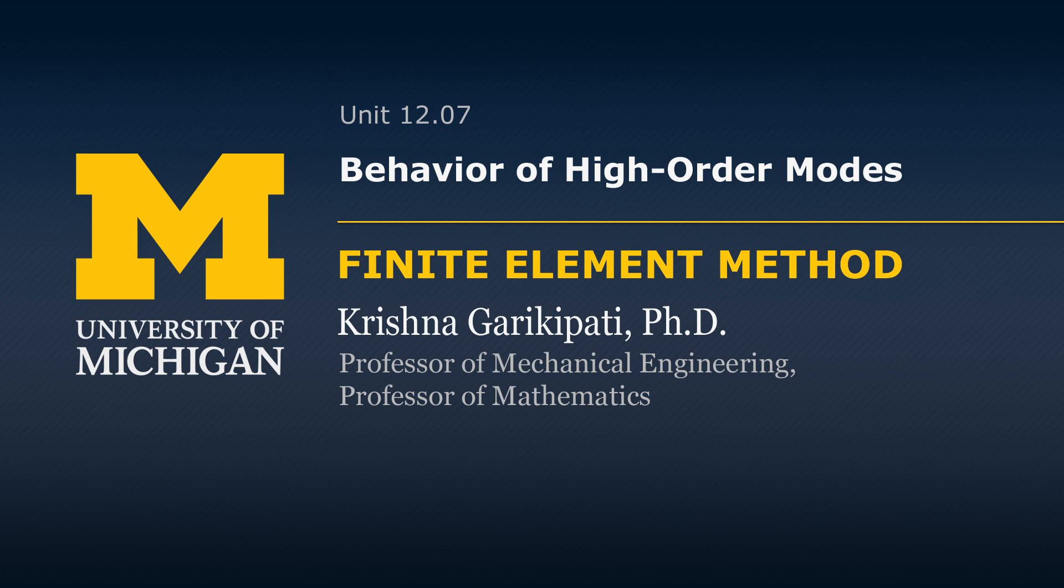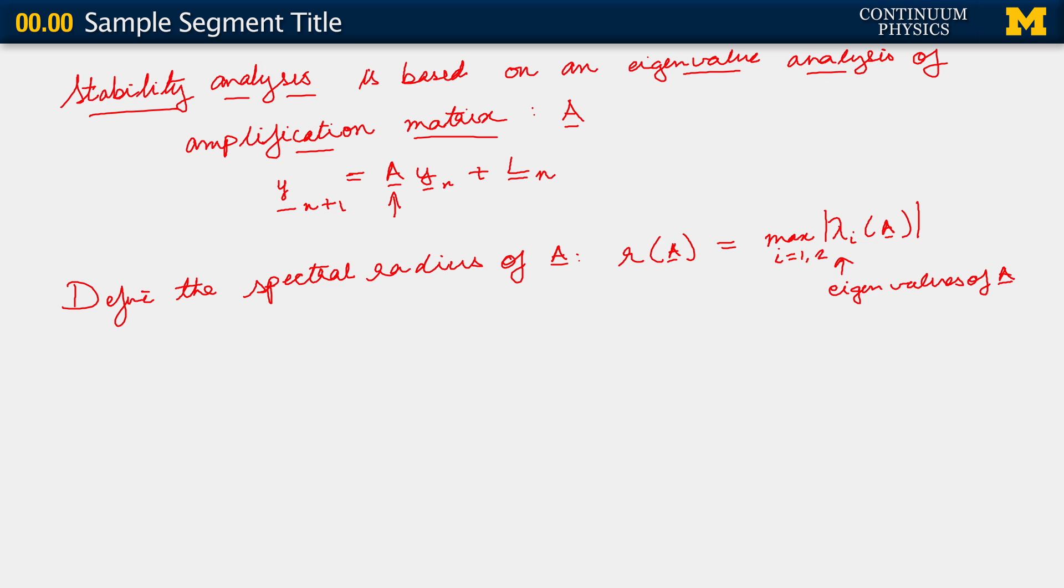This is defined as the maximum over i of lambda_i of A, where those lambdas are essentially the eigenvalues of this two-by-two matrix. And because it's a two-by-two matrix, of course i just runs over one and two. That's probably not even worth using an index there. So let's say that max i equals 1 comma 2. Essentially, it's the maximum eigenvalue. Not just the maximum eigenvalue, but actually it is the magnitude of it.